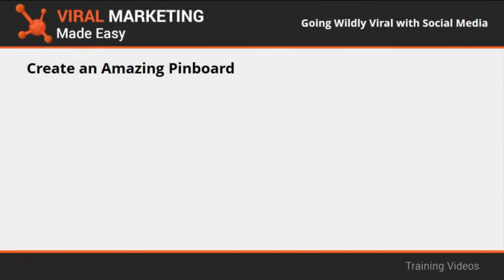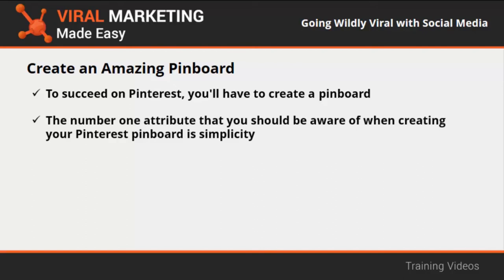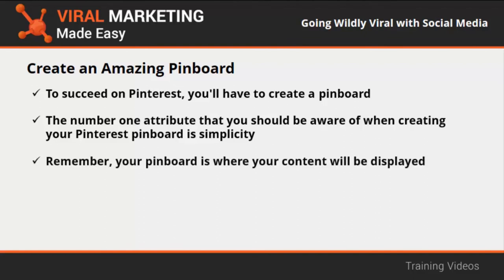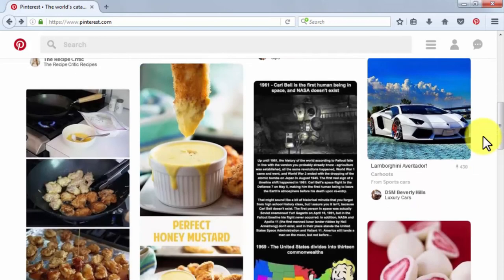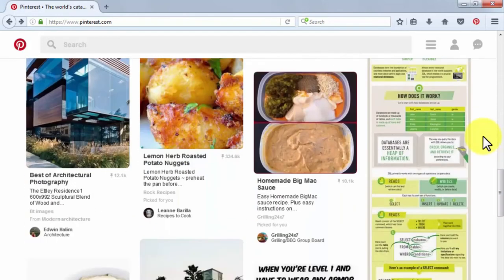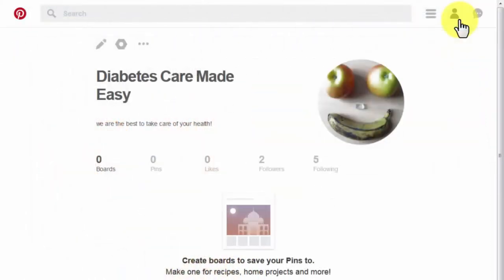To create an amazing pinboard, the number one attribute is simplicity — simplify navigation so your users can access and share your content more easily. Your pinboard is where your content will be displayed — think of it as your Facebook wall, but organized as a content menu dashboard rather than a timeline. Go to your profile, click Create Board, and create boards separated into categories for each of your viral posts. For example, if several viral posts are news-related, create a board for news; if some are sports-related, create a separate board for sports.